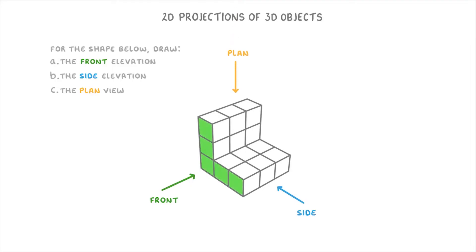So from the front you'll see these 5 squares, which will give us a 2D projection like this.